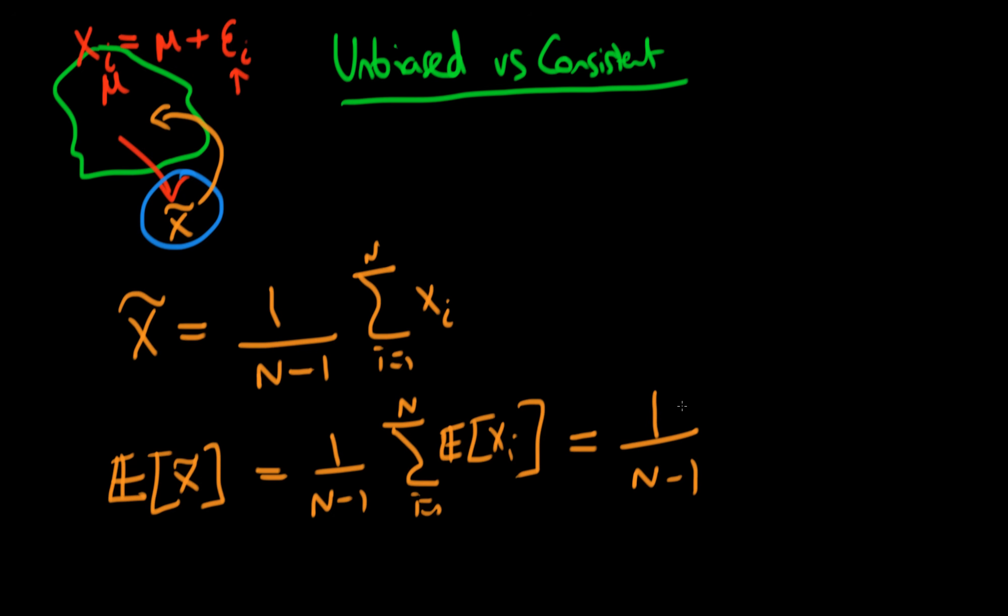So this top actually becomes n because I've got n individuals in my sample times mu. Writing it out into long form, I get n mu over n minus 1 is my expectation of my operator X tilde.